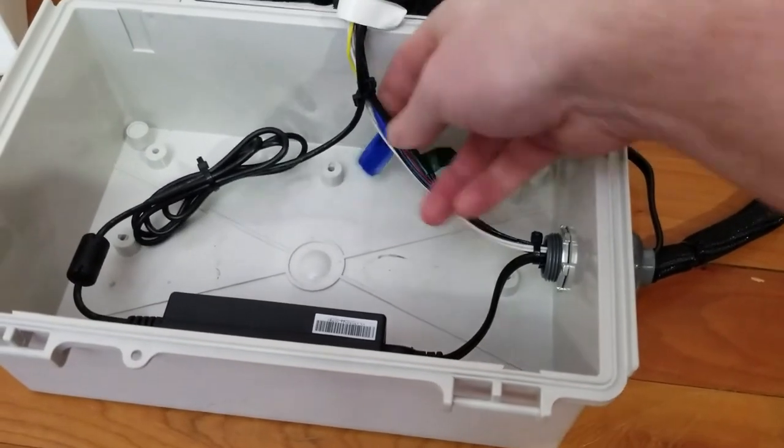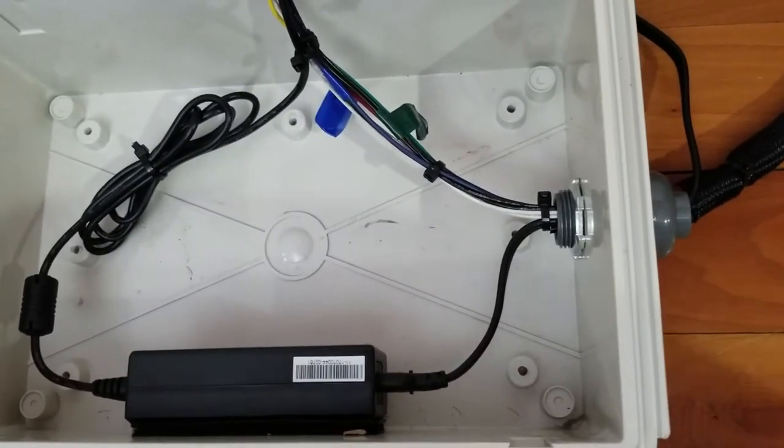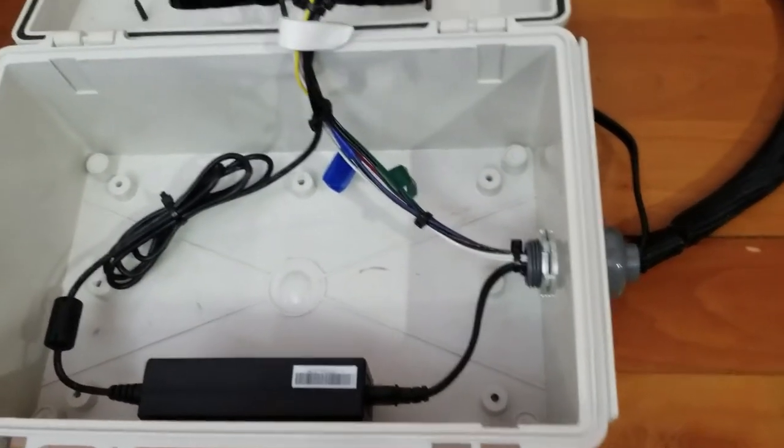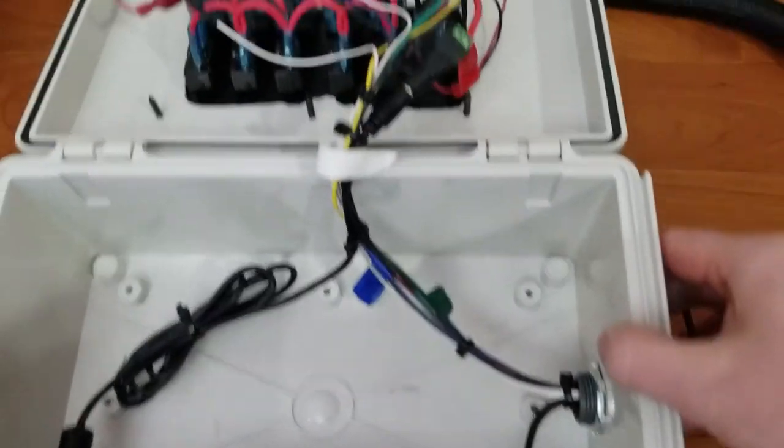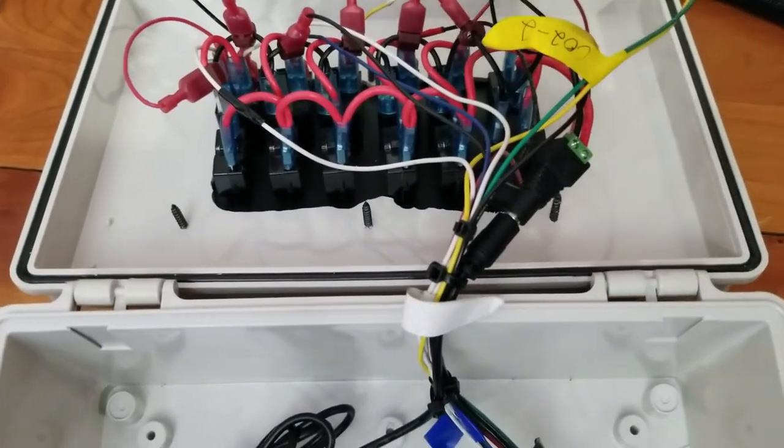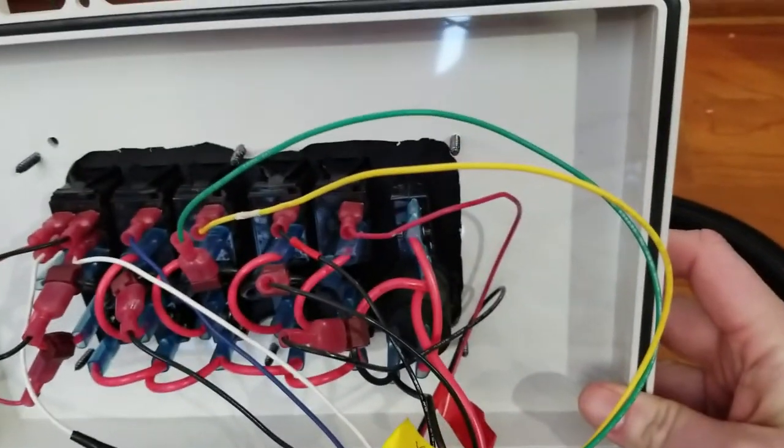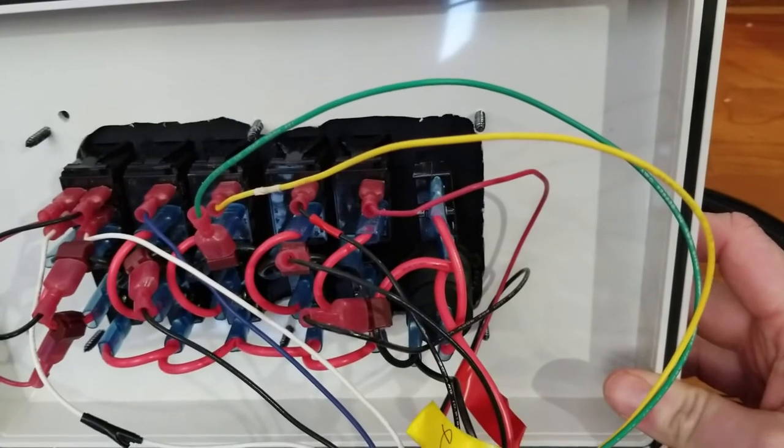12 volt power source there that controls everything. Everything was done with a tap so it's unplugged. You can unplug and switch any of your gauges or your switches around that you want, however you want to do it.